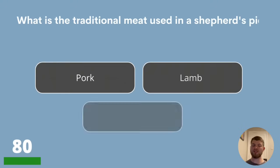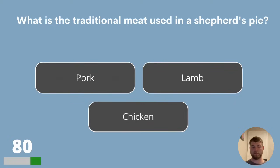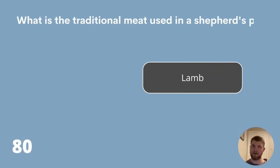Question 80. What is the traditional meat used in a shepherd's pie? Pork, lamb or chicken? The answer is lamb. And that round has left me quite hungry! But time to leave our rumbling bellies behind to move into our category about sports.